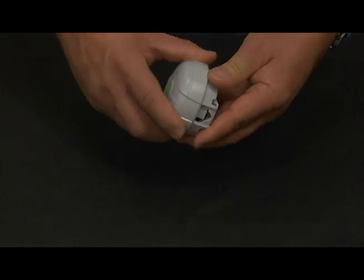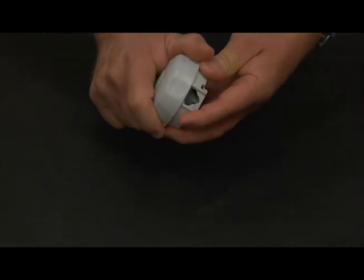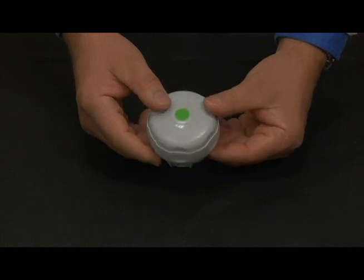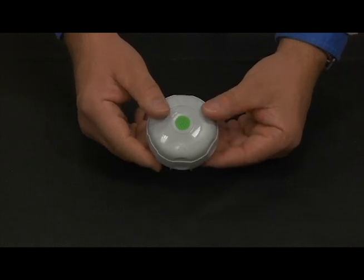Grab the base of the membrane changer with one hand. Turn the top clockwise with the other hand to the next stop. Verify that the arrow aligned with the hole points towards the green center dot.